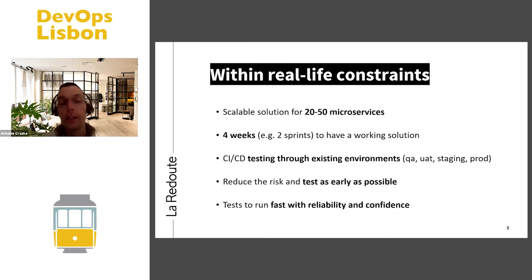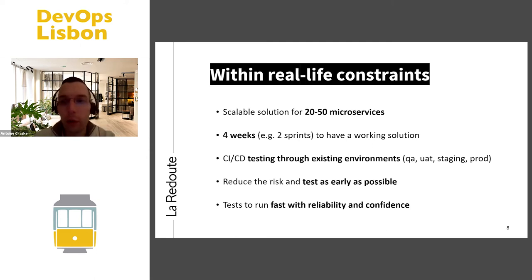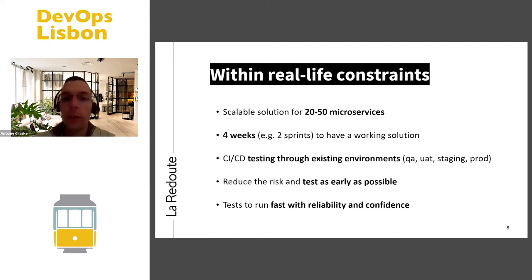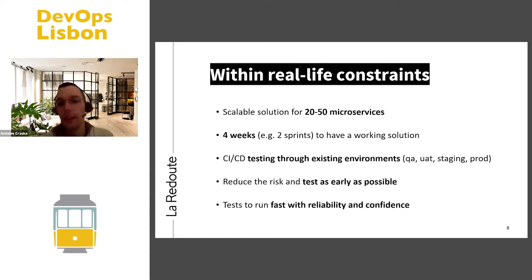The requirements we had for testability were: a scalable solution for 20 to 50 microservices — not just one, two, or five. We had four weeks to implement something working for the project as components were being delivered. We needed to test in CI/CD through various environments, reduce risk by testing as early as possible, and ensure the tests had value for the teams and could run fast with reliability and confidence to support parallel deployments.